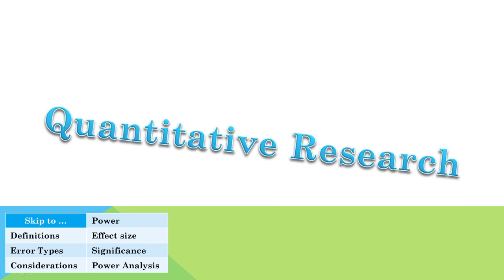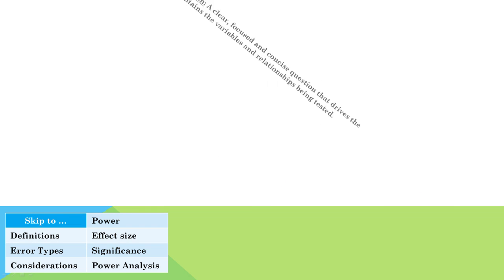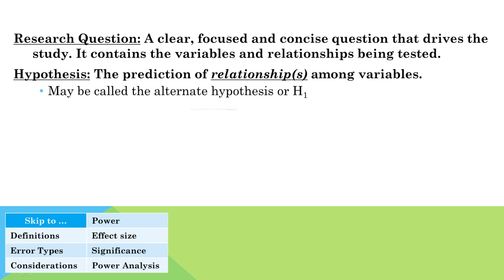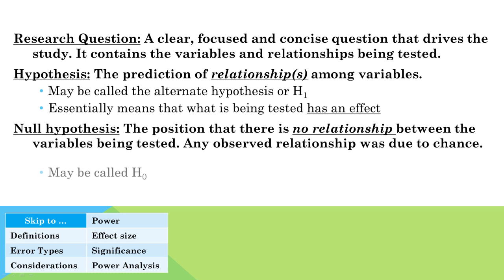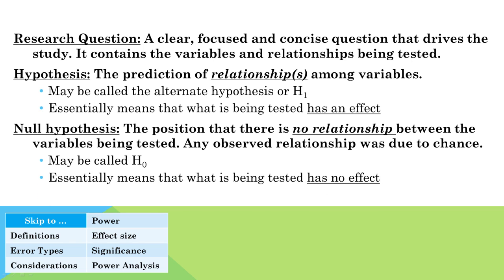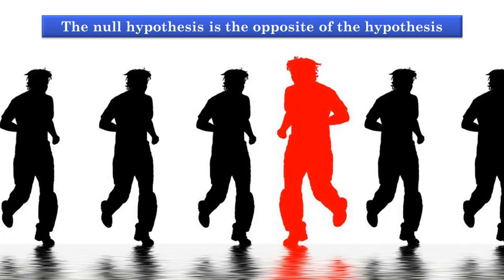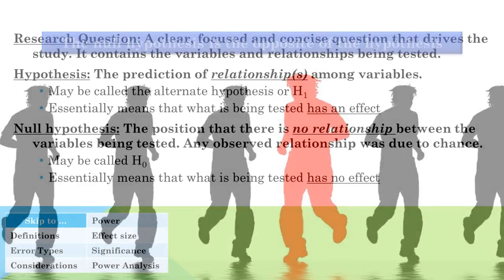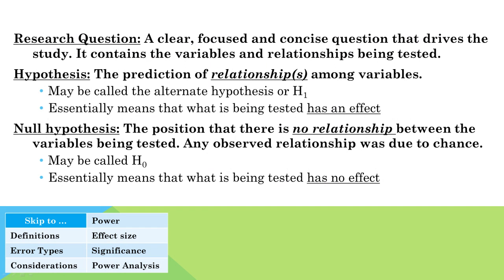Quantitative research is driven by research questions and hypotheses. For every hypothesis, there is an unstated null hypothesis. The null hypothesis does not need to be explicitly stated because it is always the opposite of the hypothesis. In order to demonstrate that a hypothesis is likely true, researchers need to compare it to the opposite situation. Remember that null is kind of like no, so a null hypothesis means there is no relationship.